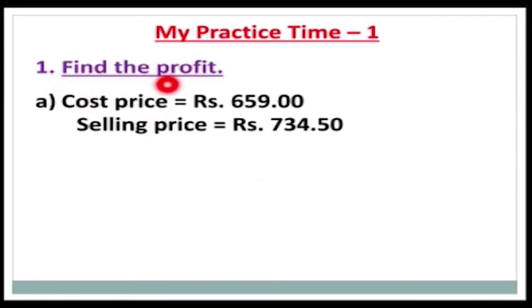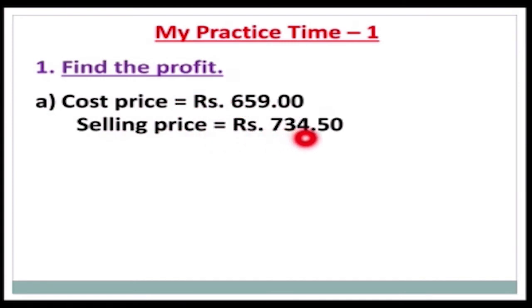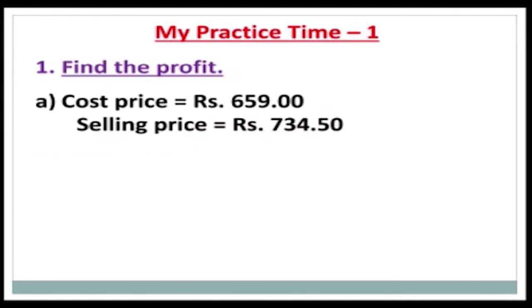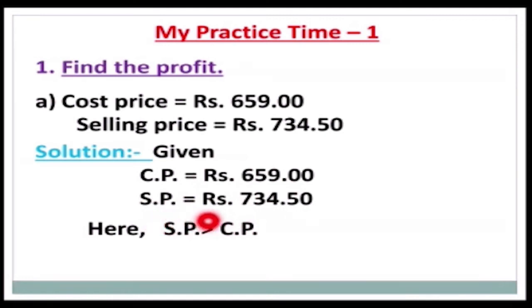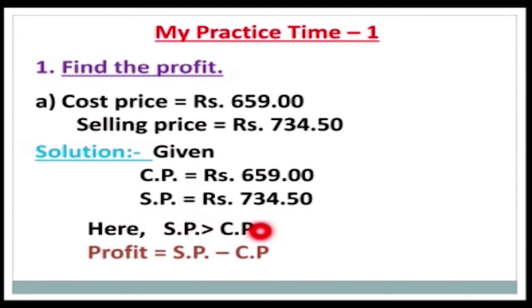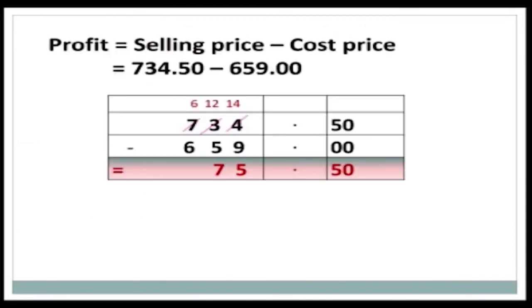Now we will solve a question from practice time. Question number one: find the profit. Cost price equals rupees 659 and selling price equals rupees 734.50. Since SP is greater than CP, there is a profit. Profit equals SP minus CP.